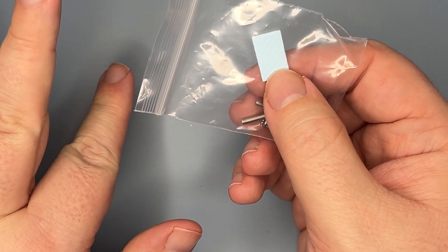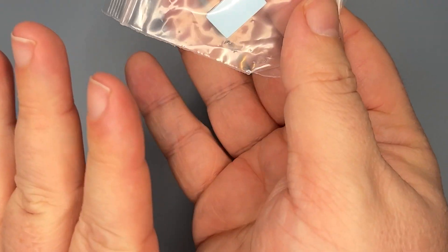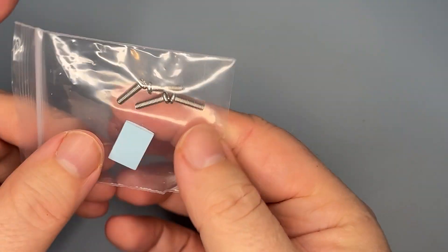You pull the piece of film off, put the thermal pad on the Raspberry Pi 5, pull the other piece of film off, and then stick the whole thing to your FLIRC case.